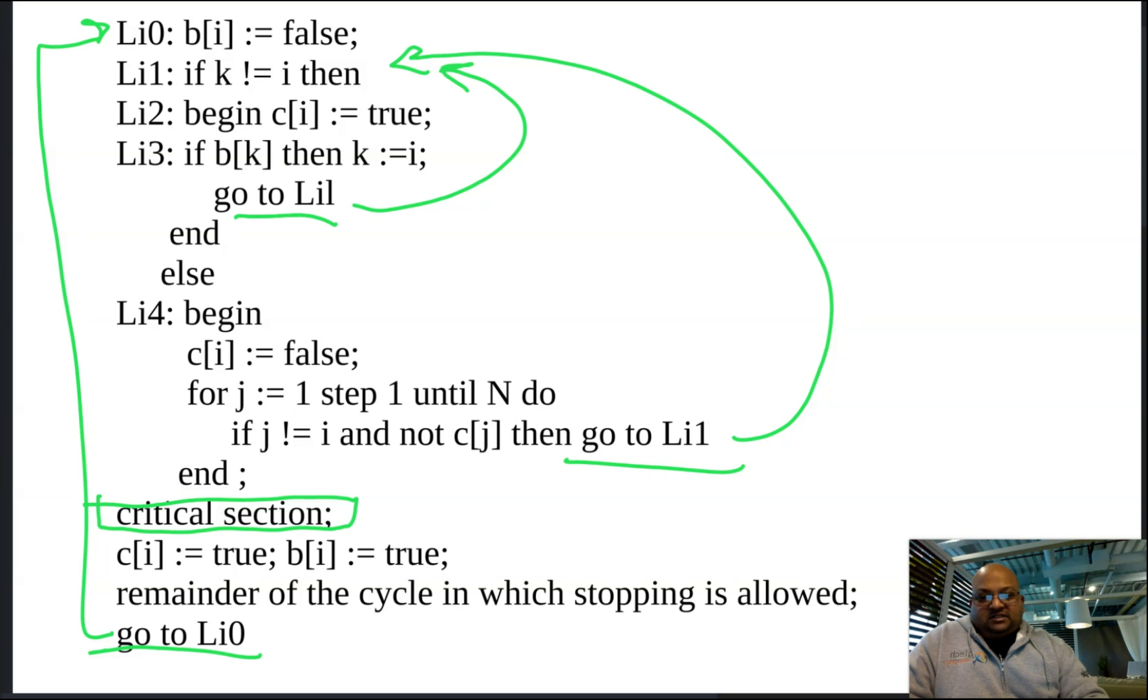First, let's see what's happening to the B array. When is B of I false? When is it true? Right at the beginning, we set B of I to be false, and then it stays false throughout. We never write to B of I except right after the end of the critical section when we say B of I is equal to true. And then we go back to the beginning and B of I is false again.